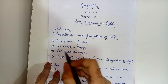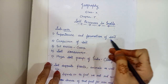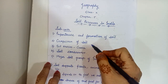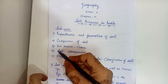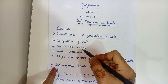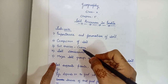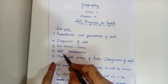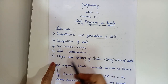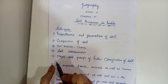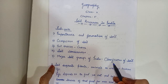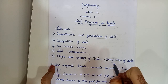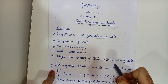The five sub-units are: first, importance and formation of soil; second, composition of soil; third, soil erosion — in which we will discuss about the causes of soil erosion; fourth, soil conservation; and fifth, major soil groups of India, where different types of soil groups will be discussed.